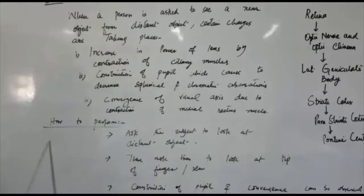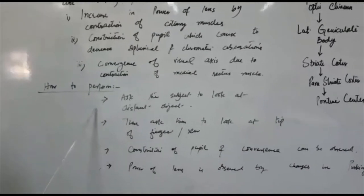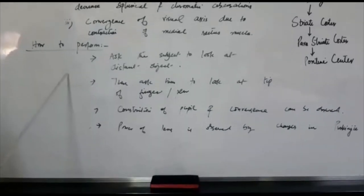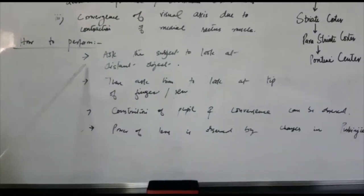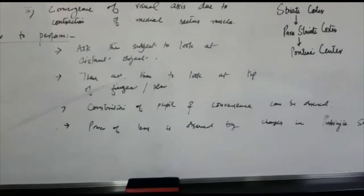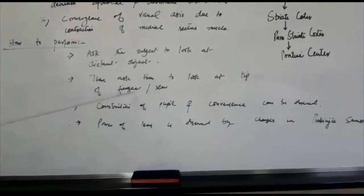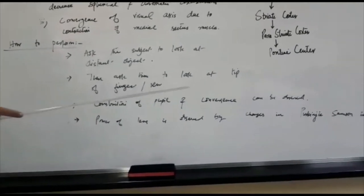Now, how will you perform? First of all you will follow the protocol, introduce and take consent from the subject, then ask the subject to look at the distant object, then ask them to look at the tip of your finger or pen.